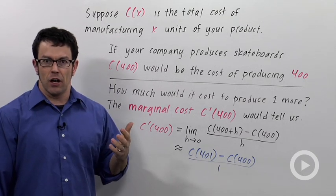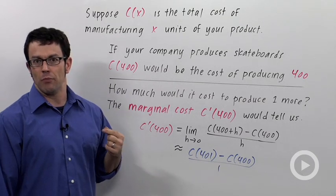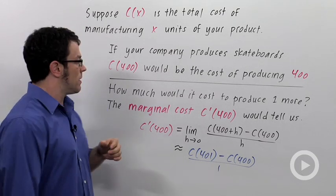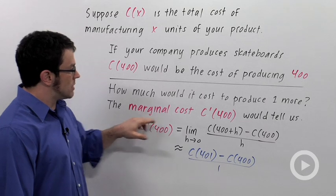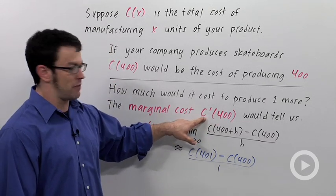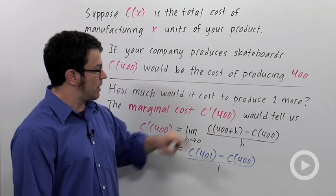Now the question is, how much would it cost to produce one more skateboard? So you're already producing 400. What does it cost to produce 401? Well, that's something that the marginal cost would tell you, C prime of 400. And C prime is just what it looks like. It's the derivative of the cost function evaluated at 400.